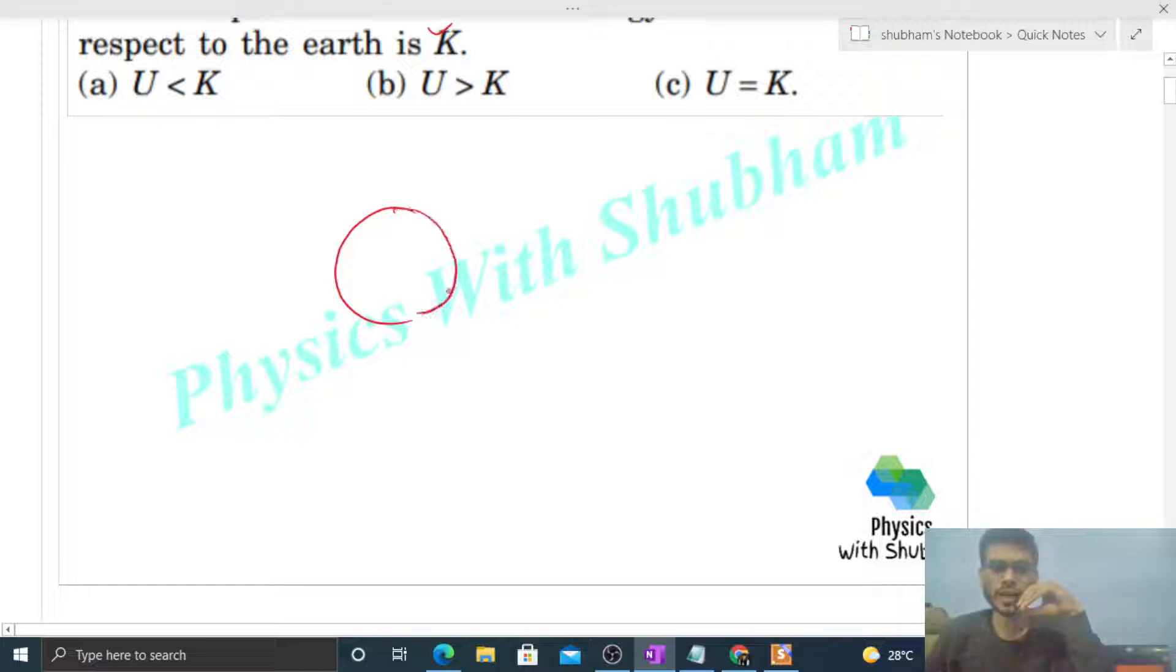So we have Earth and Moon. Let's say mass of Earth is capital M, mass of Moon is small m, and the separation between the center of Earth and center of the Moon is some a. The Moon is moving in a circular path around the Earth, so we have to compare U and K.